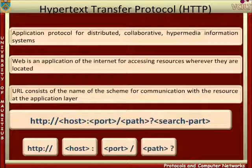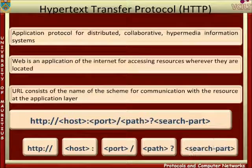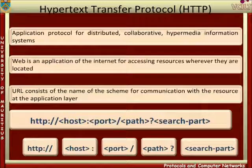The path in a URL identifies the name of the resource in the host's filing system. The search part is optional and is used when the resource is a search engine. If no port value is given, then a default value is used.